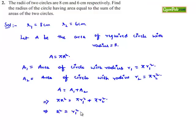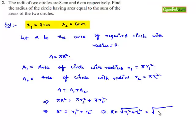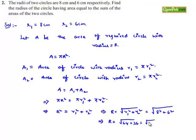Cancelling π, we get r² = r1² + r2², which means r = √(r1² + r2²) = √(8² + 6²) = √(64 + 36) = √100 = 10. Therefore, the radius of the required circle is 10 cm.